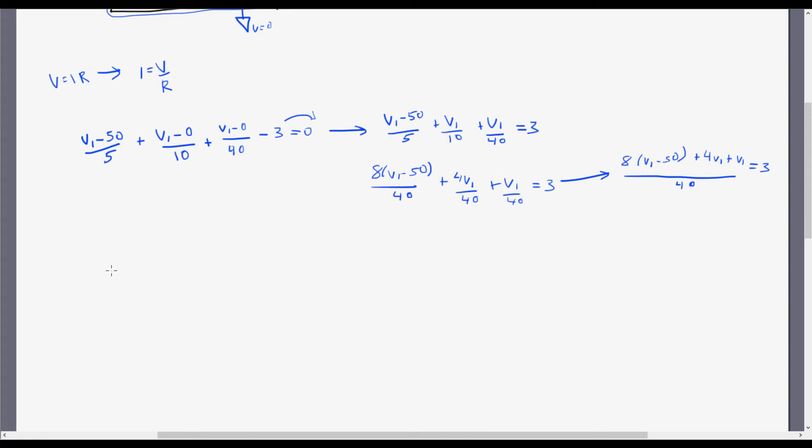So if I expand that out, what am I going to get? 8 V1 minus 400, plus 5 V1, equals 120. If I take this 40 and just multiply it to the other side, I get 120.